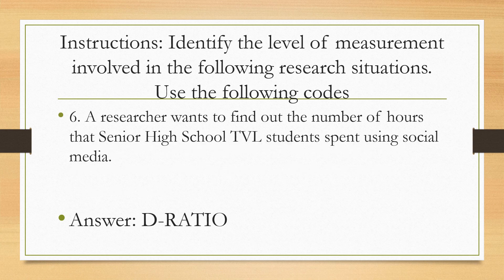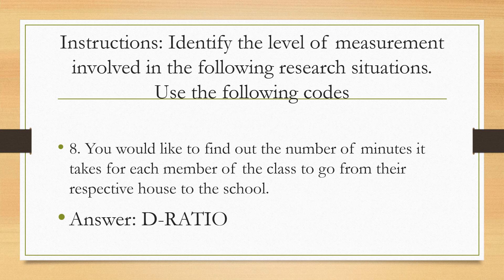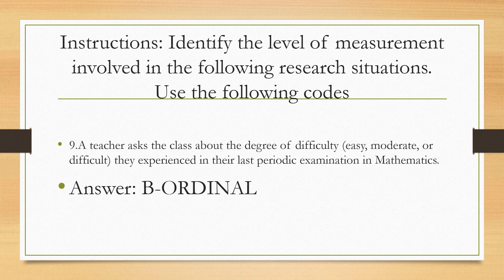Number 6: a researcher wants to find the number of hours senior high school students spend using social media — ratio variable, because we measure the number of hours. Number 7: a veterinary assistant records the breeds of dogs brought for treatment — nominal variable, as letter A indicates. Number 8: you want to find out the number of minutes it takes for each class member to travel from their house to school — ratio variable. Number 9: a teacher asks the class about the degree of difficulty of an exam — easy, moderate, or difficult — it is ordinal, because the categories can be ordered from easy to moderate to difficult.